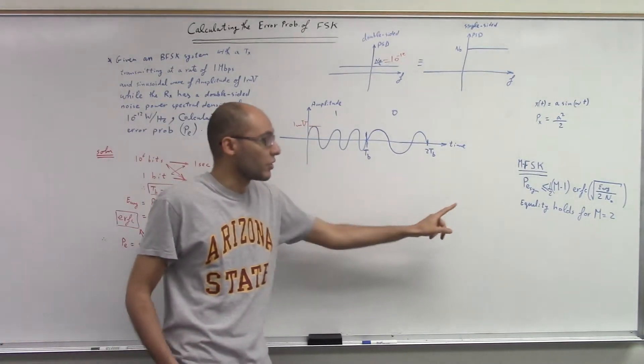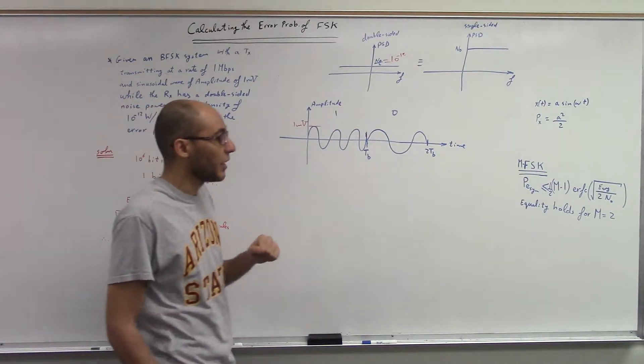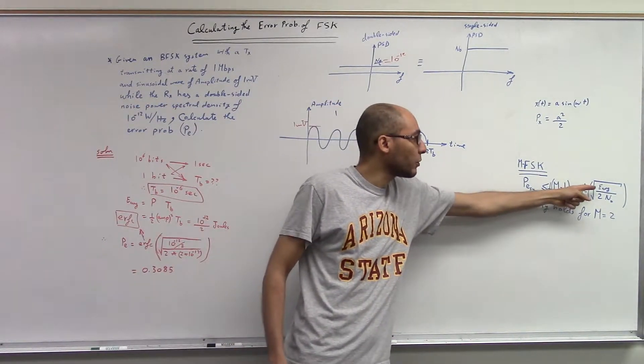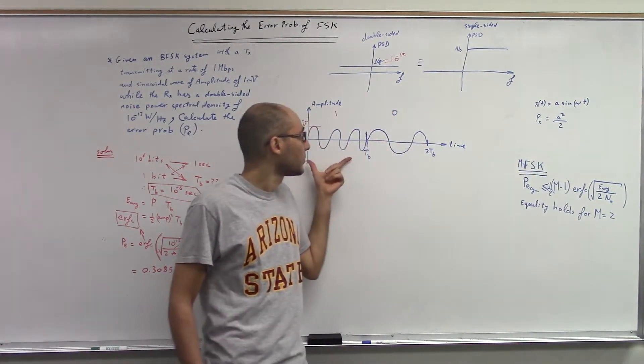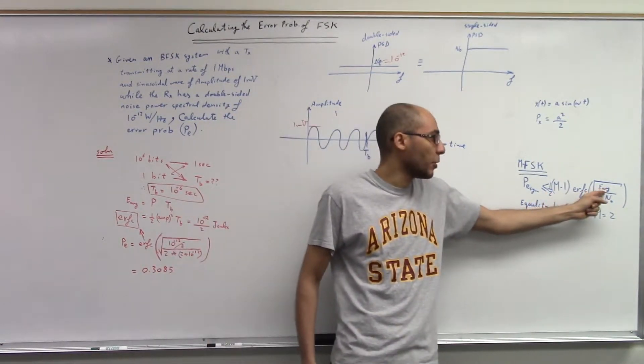But I need to calculate the average energy, and that's why I am using these steps to calculate the average energy. The average energy equals the power of the sinusoidal signal multiplied by the bit duration. Why the bit duration? Because this is the average energy per bit.